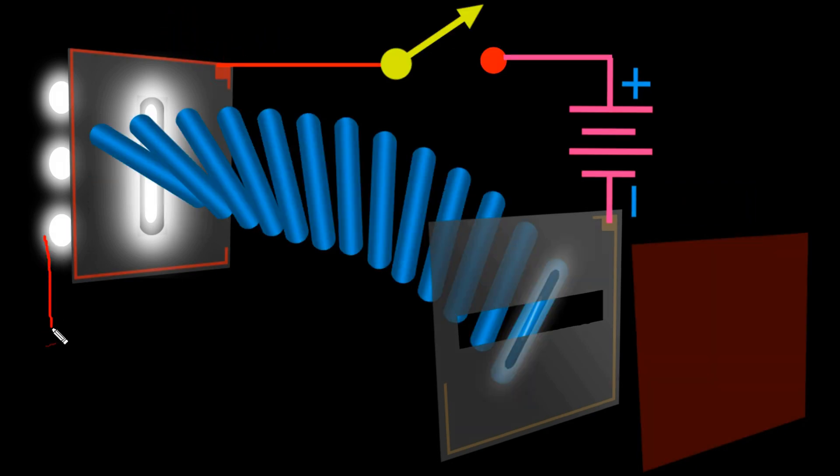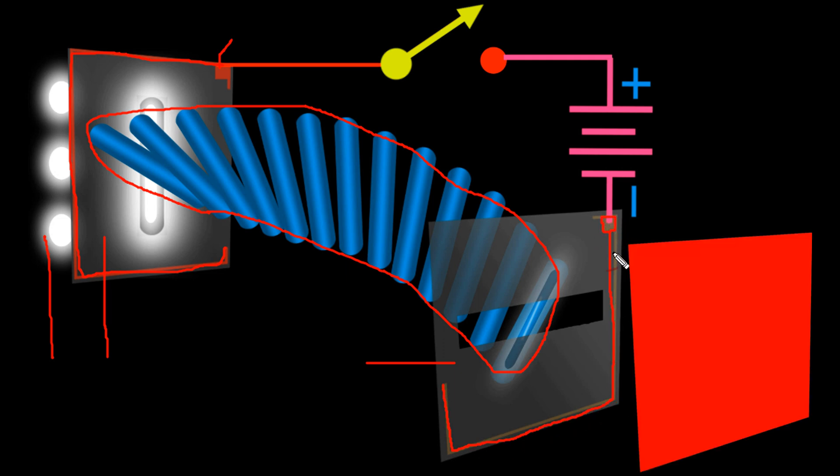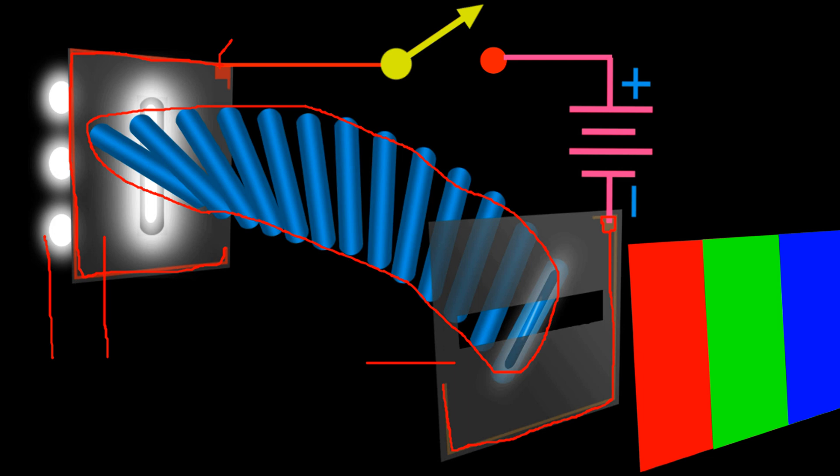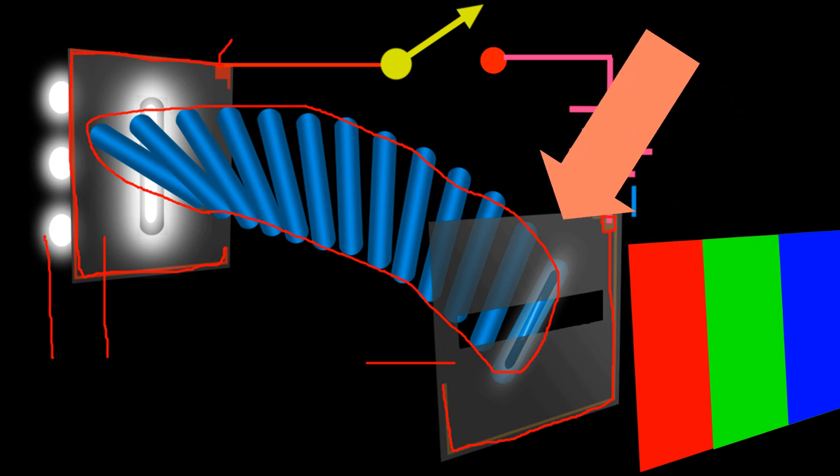This is backlight. This is positive electrode of liquid crystal. This is vertical polarizer. This is liquid crystal. This is horizontal polarizer. This is negative electrode of liquid crystal and this is red subpixel of RGB pixel. Basically it is located below the horizontal polarizer.